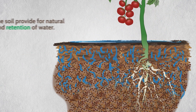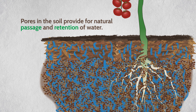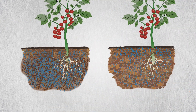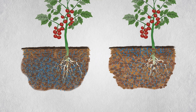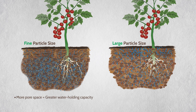Pores in the soil provide for the natural passage and retention of water within the plant root zone. A soil's ability to retain water is related to particle size and organic matter. Soils with fine particle size, such as clay, have more pore space and greater water holding capacity.